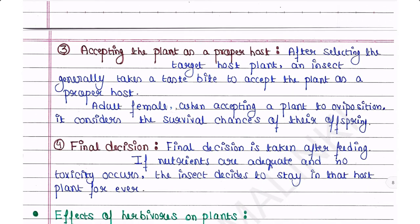Third is accepting the plant as a proper host. After selecting the target host plant, an insect generally takes a test bite to accept the plant as a proper host. Adult females, when accepting a plant for oviposition (expulsion of eggs from the oviduct to the external environment), consider the survival chances of their offspring.